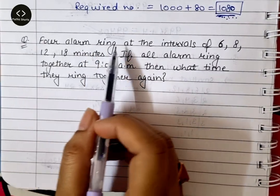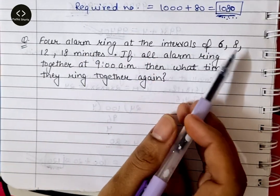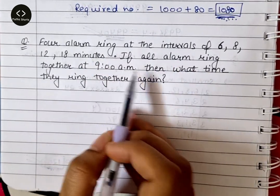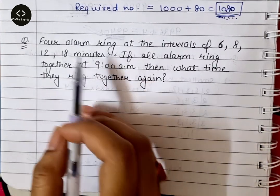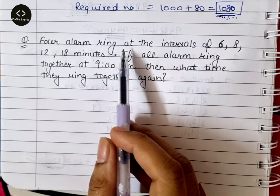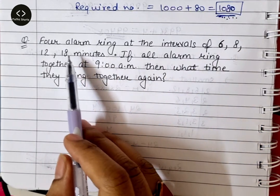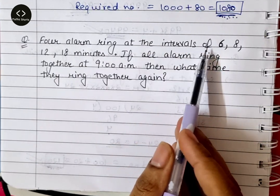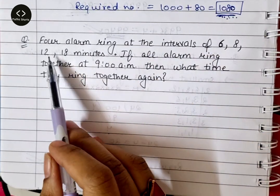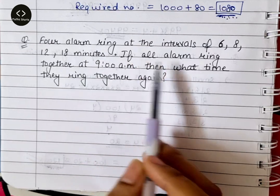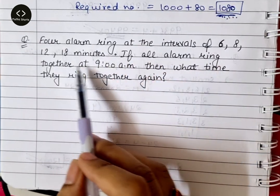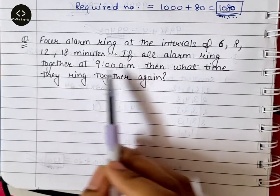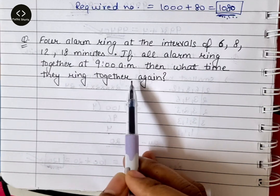Question: 4 alarms ring at the intervals of 6, 8, 12, and 18 minutes. If all alarms ring together at 9 AM, then what time will they ring together again? यानी 6, 8, 12 and 18 minutes के interval पर ring कर रहे हैं। अगर सारे alarm एक साथ 9 बजे ring करें, then what time they ring together again?